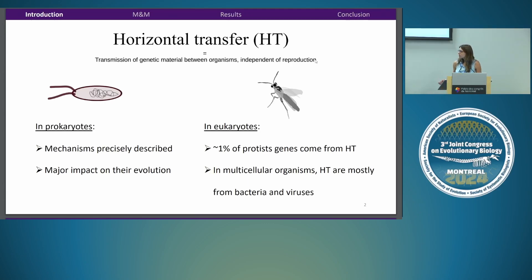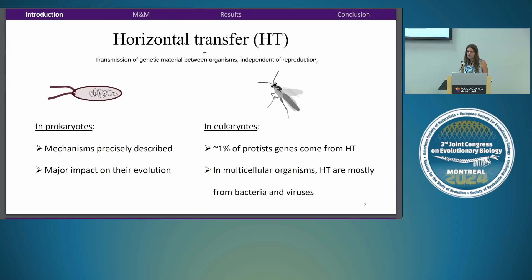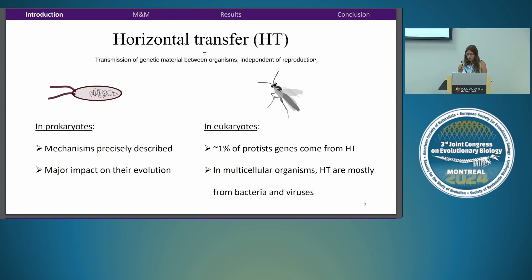In prokaryotes, the mechanisms are well known and HT has a major impact on their evolution. In eukaryotes, however, it was thought for many years that horizontal transfer was not even possible because of additional barriers. But since then, it was estimated that about one percent of phylogenic genes come from horizontal transfer. Regarding multicellular organisms, we now have many examples, though most transfers are from bacteria or viruses to multicellular organisms.